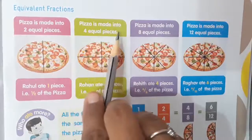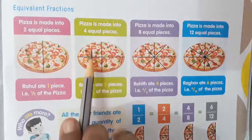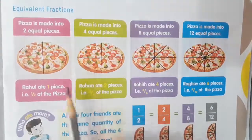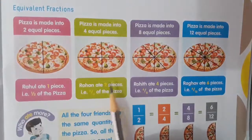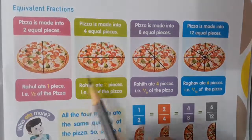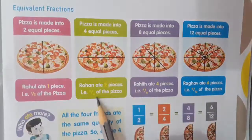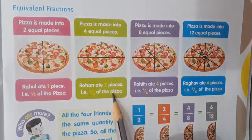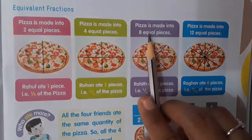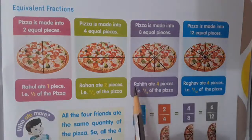The next pizza is made into 4 equal pieces — 1, 2, 3, 4. Rohan ate 2 pieces. That is 2 by 4 of the pizza.